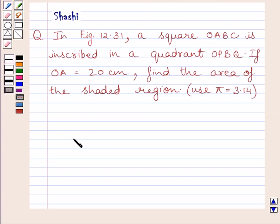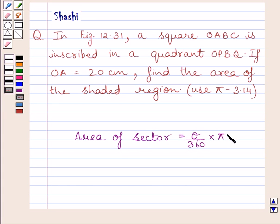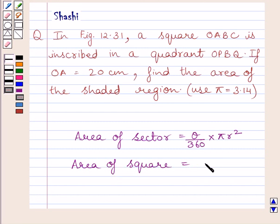First of all, let us understand that the area of a sector of a circle is equal to theta upon 360 multiplied by pi r squared, where theta is the angle of the sector in degrees and r is the radius of the circle. And the area of a square is equal to side squared. This is the key idea to solve the given question.